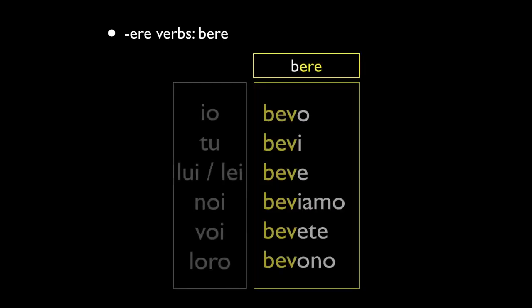The first one is bere, to drink — a very common verb. Here are the subject pronouns. The only thing you have to learn about bere is that it forms an irregular stem: bev. If you look at the infinitive form bere and tried to form it like a regular verb by dropping the -ere, you'd just have 'be,' giving you 'bo, be, be' — that doesn't sound right. So it uses the bev stem instead. Bevo — I drink, bevi — you drink, beve — he/she/you formal drinks, beviamo — we drink, bevete — you all drink, and loro bevono — they drink.